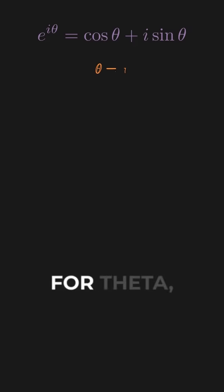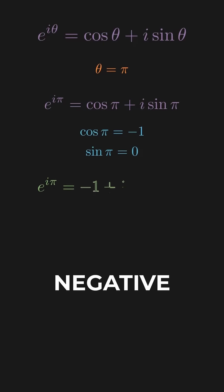And if you plug in pi for theta, you can see that you get an answer of negative one, because cosine of pi is negative one, sine of pi is zero, so negative one plus zero is negative one. This single equation connects five fundamental constants in a single relationship.